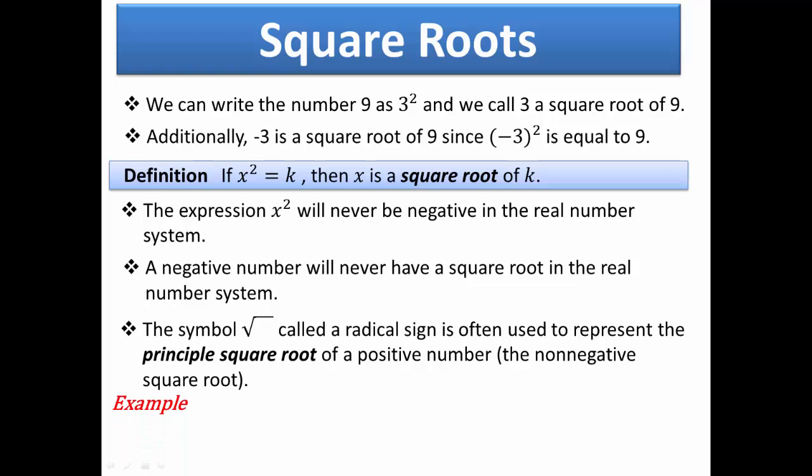For another example, the square root of 25 is used to represent the non-negative square root of 25. Therefore, the value of the square root of 25 is 5, since 5 squared equals 5 times 5, which equals 25, and 5 is the positive square root of 25.